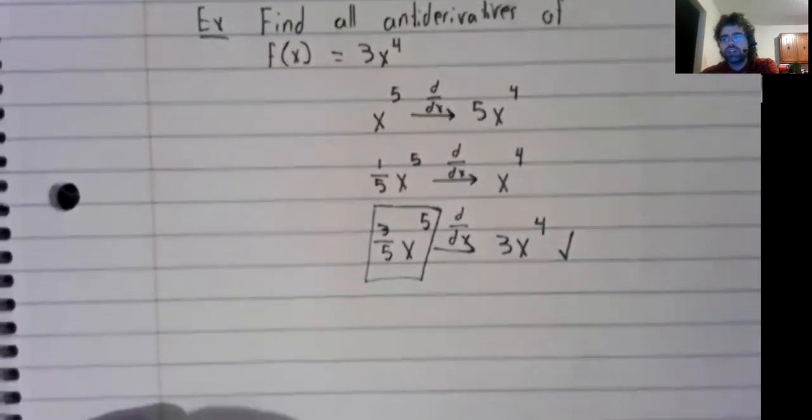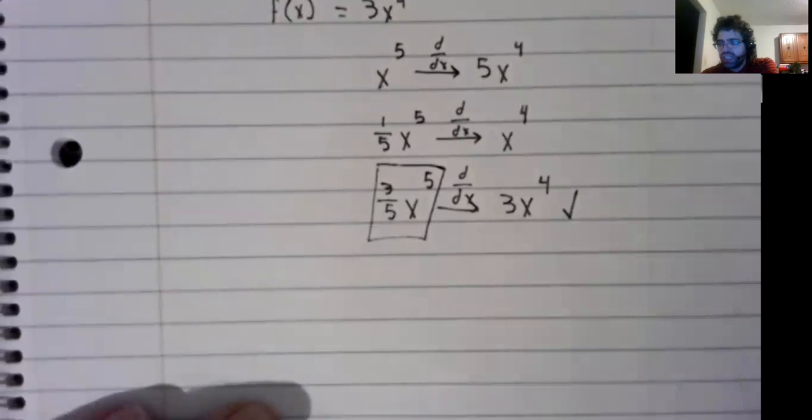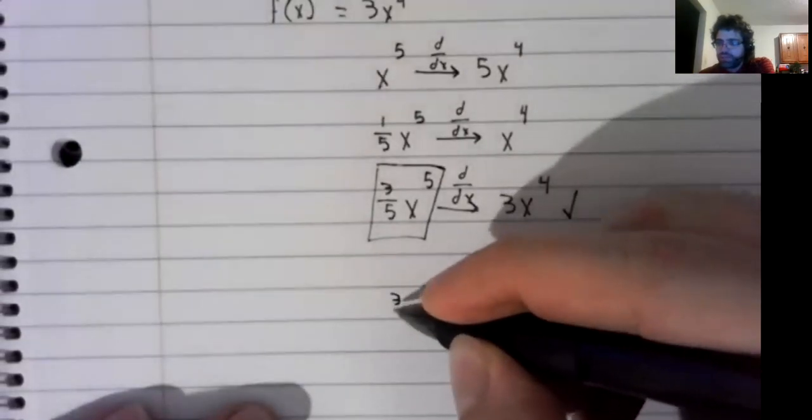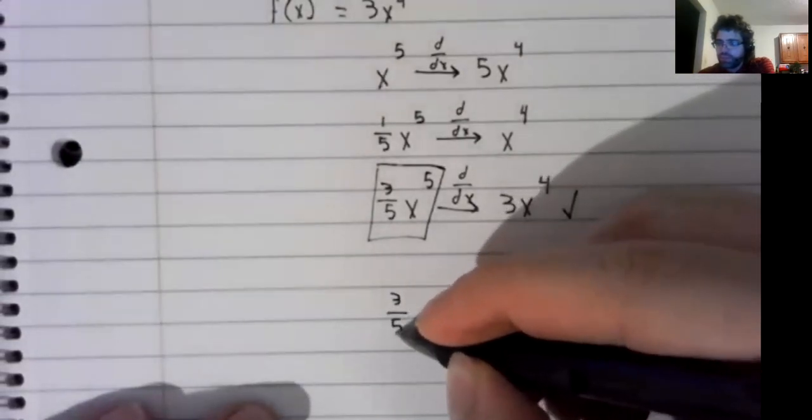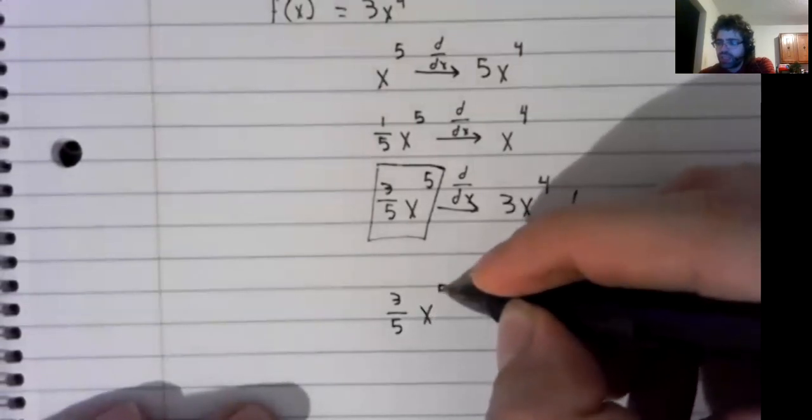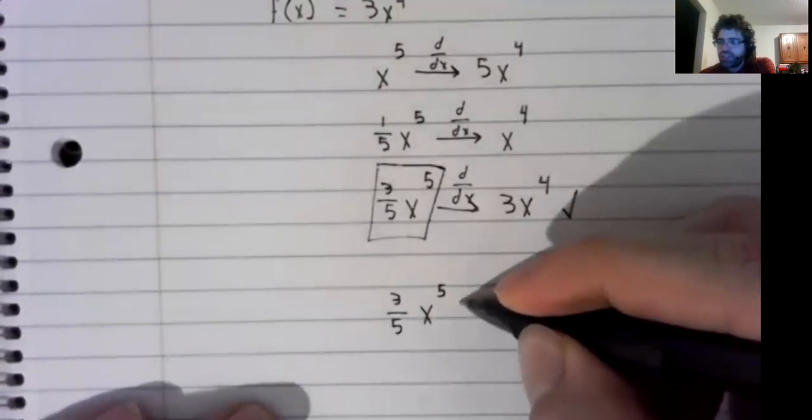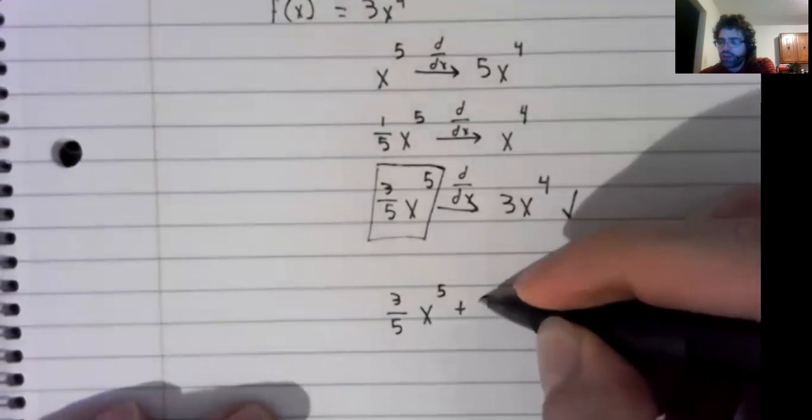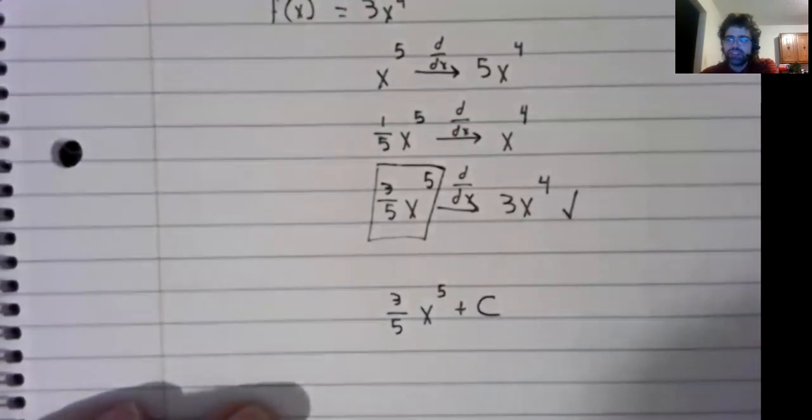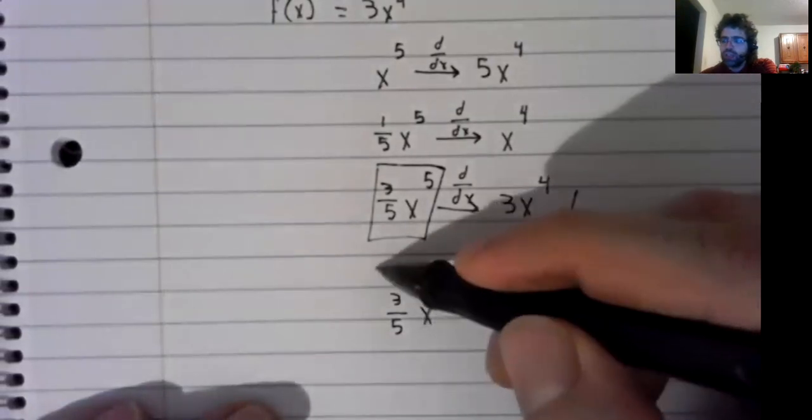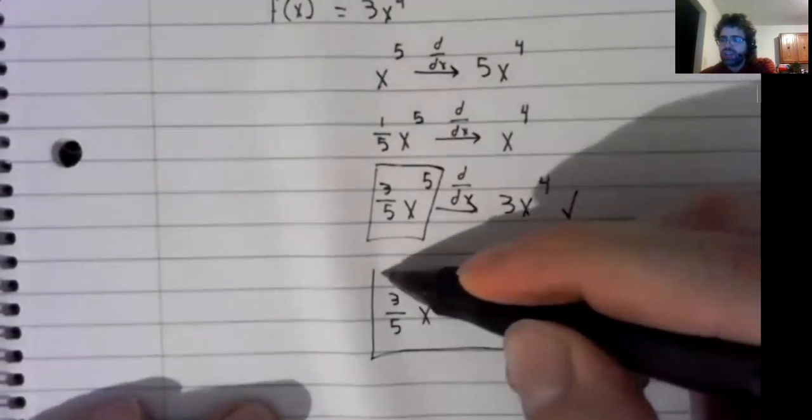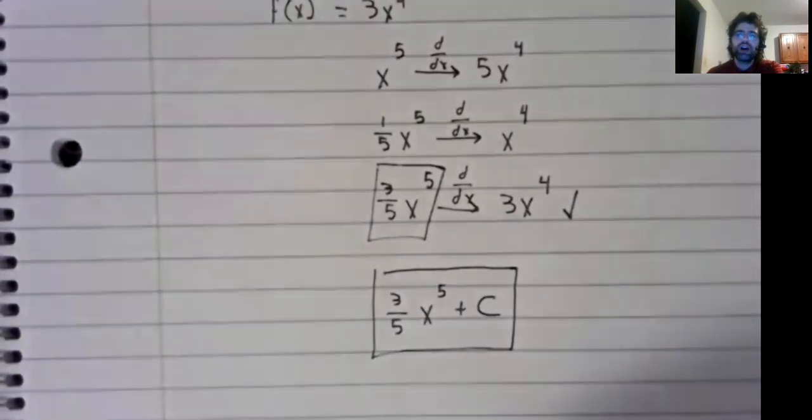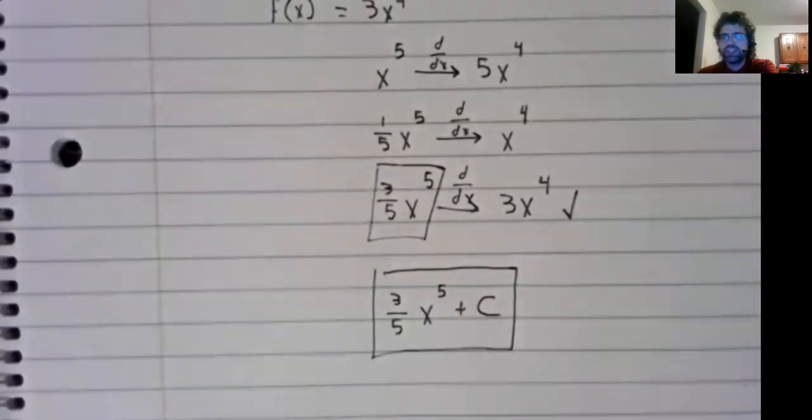It's not the only antiderivative. But what this theorem tells us is that every other antiderivative is just this one plus a constant. Here are all the antiderivatives of 3x to the fourth.